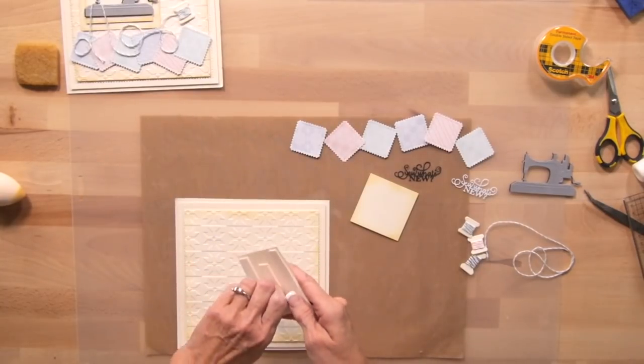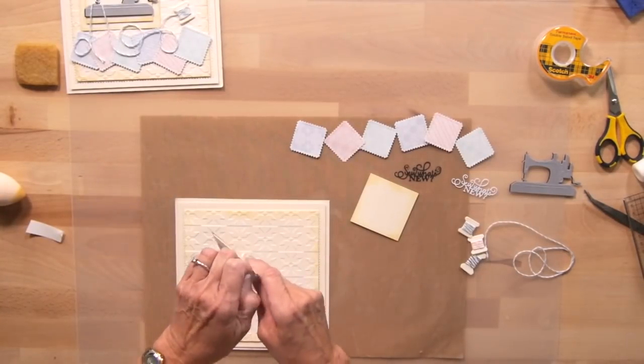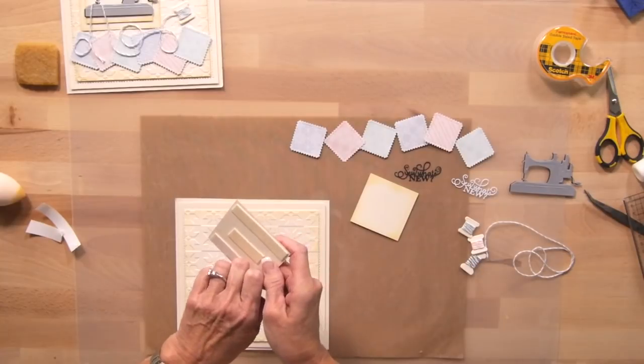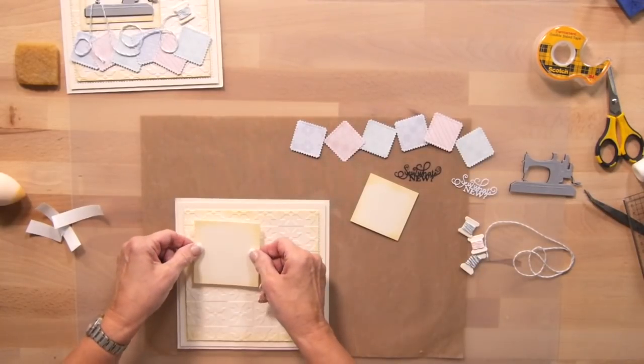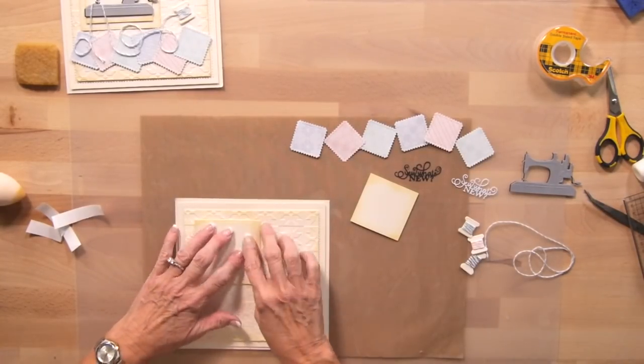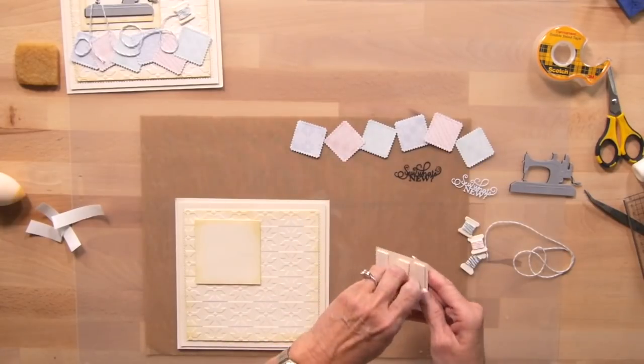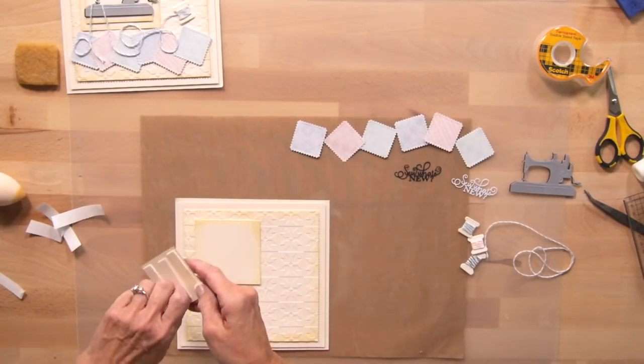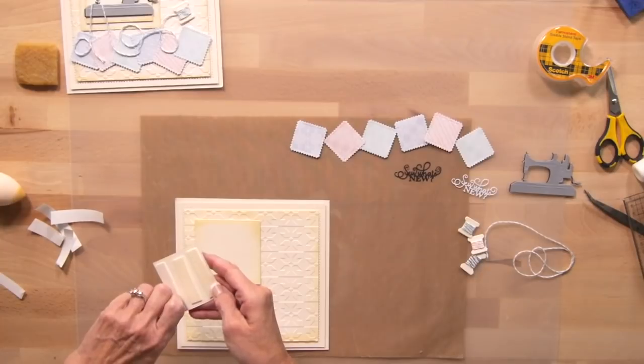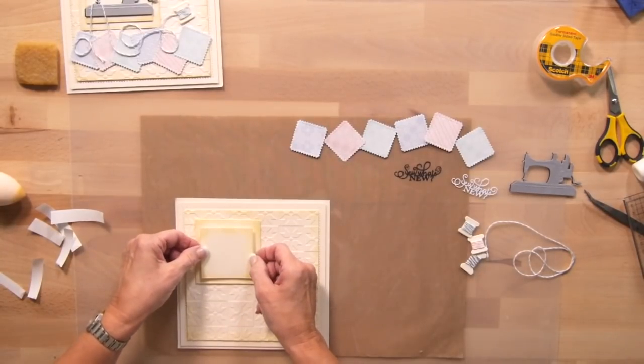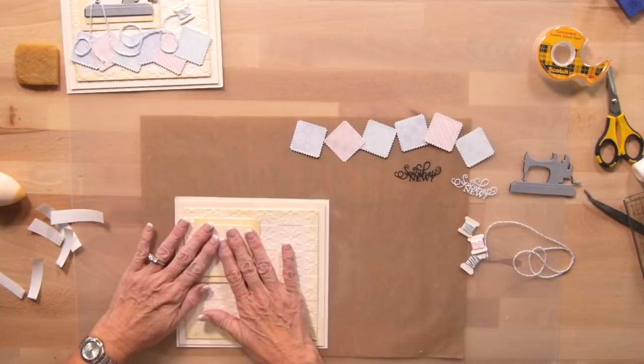So now I want to build up a little base here. So I'm going to use the double-stitched squares up in this corner. Just give it right about like that. And we're going to double it up. Raise it up a little bit.